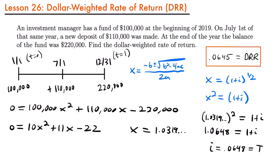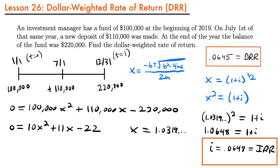Using x equals 1.0319, we solve for i: 1.0319 squared equals 1 plus i, which gives 1.0648 equals 1 plus i. Subtracting 1 from both sides, i equals 0.0648, which is our internal rate of return. You can see that the internal rate of return is just slightly different than the dollar-weighted rate of return — these are two different rates, so you need to be sure which one you are calculating in a particular scenario.